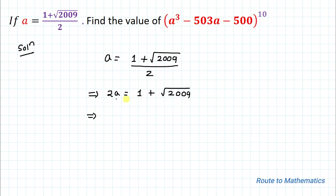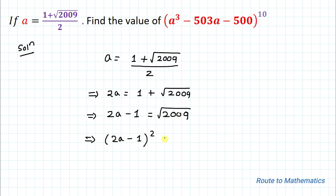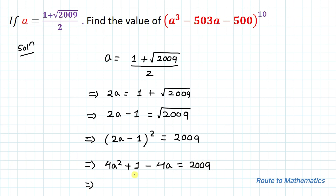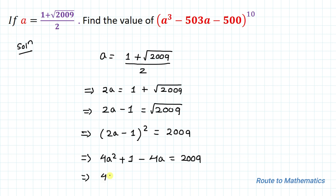In the next step, we take the 1 to the other side: 2a - 1 = √2009. We then square both sides, giving (2a - 1)² = 2009. Applying the algebraic identity (a - b)², we get 4a² - 4a + 1 = 2009.